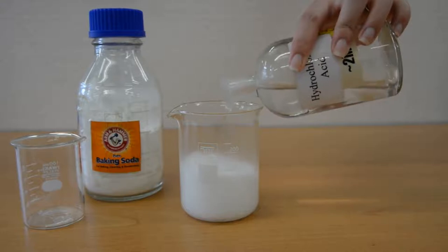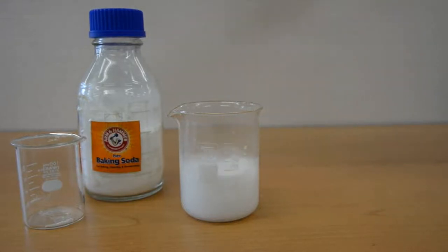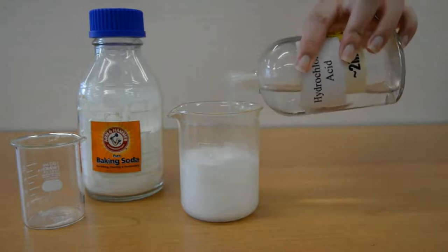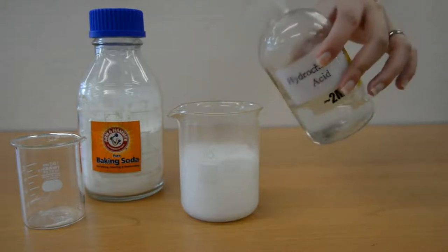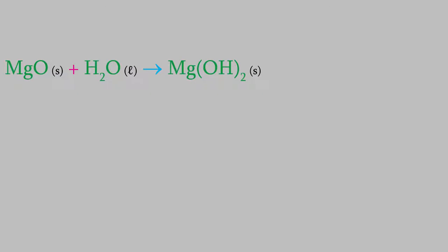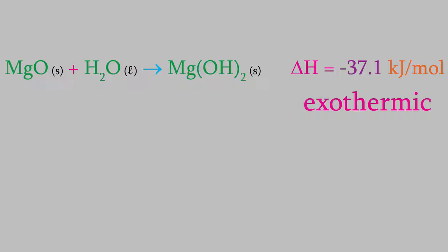Let's start by remembering some things that we saw way back when we talked about enthalpy. Reactions can have either a positive or negative enthalpy. For example, here's the reaction in which magnesium oxide and water react to form magnesium hydroxide. The enthalpy of that reaction is negative 37.1 kilojoules per mole, which means that this is an exothermic reaction.